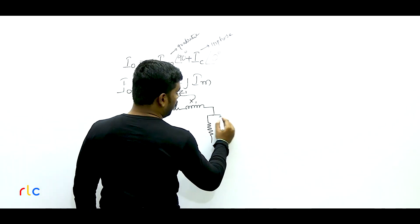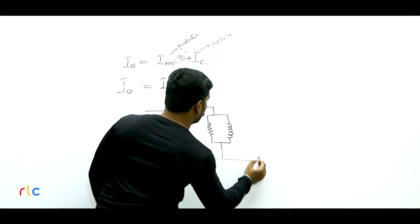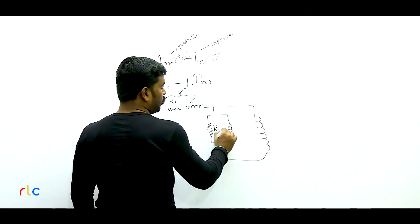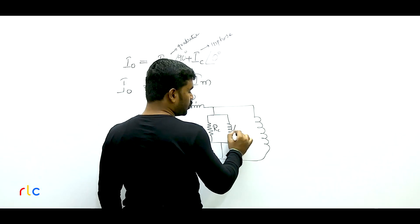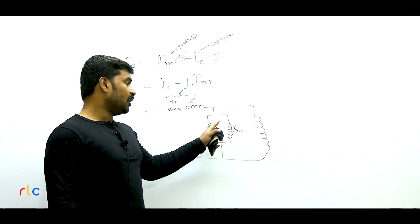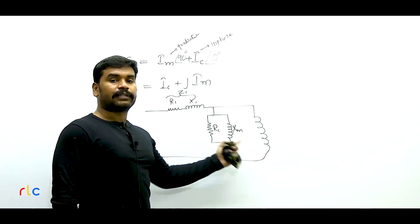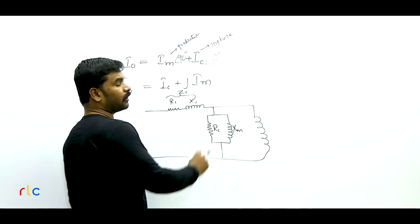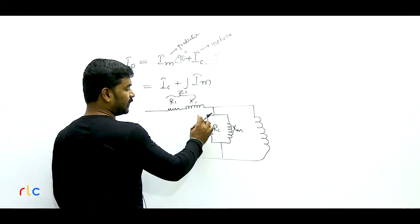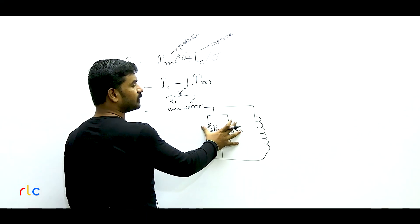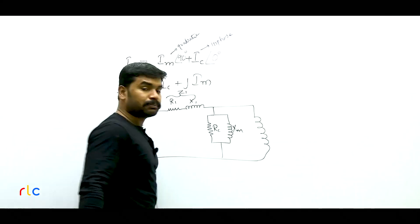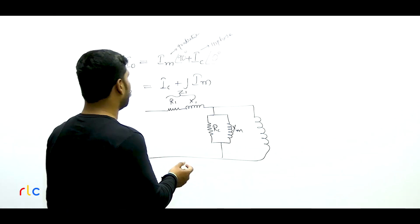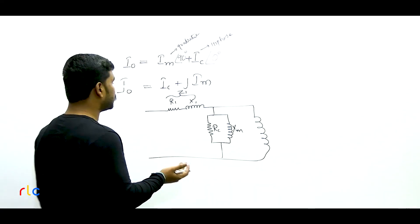Here K = N2/N1 = 1/3, so K² = 1/9. Therefore Z2 dash = Z2 / (1/3)² = 9 × Z2 = 9 × (1 + j5) = 9 + j45 ohms. Now Z01 = Z1 + Z2 dash = (9 + j45) + (9 + j45) = 18 + j90 ohms. Option A is the right answer.